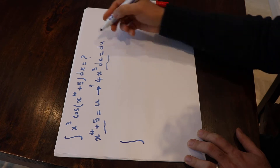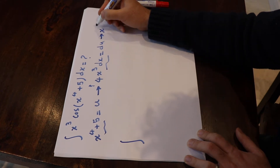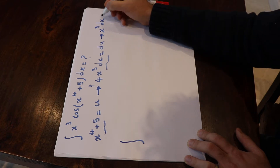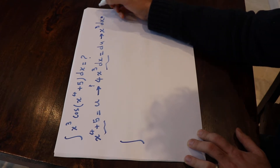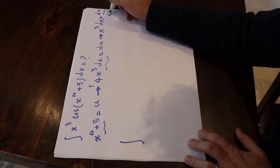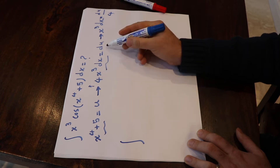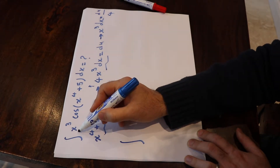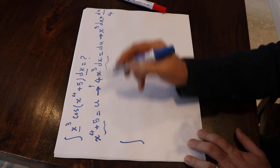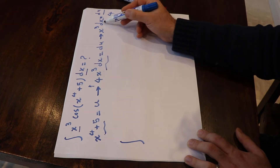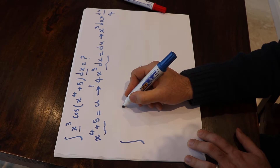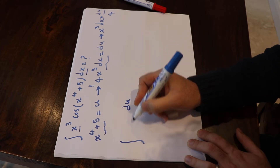From here you can conclude that x³ dx is equal to du divided by 4 — you can divide everything by 4. So here, instead of x³ dx, I put du over 4.